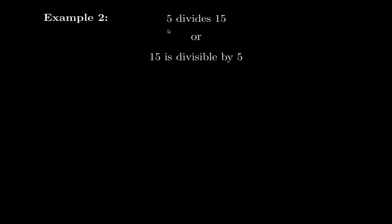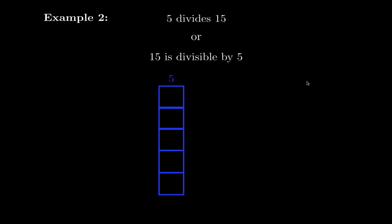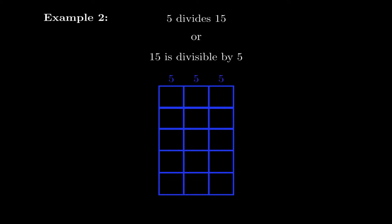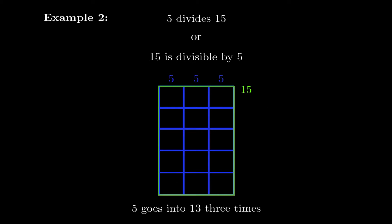We can also say that 5 divides 15 — that's a true statement — or equivalently that 15 is divisible by 5; both mean exactly the same thing. The number 5 is represented by 5 squares, and we make copies of it until we get 15, so we need 3 copies. As you can see, the number 5 divides the number 15 into 3 pieces, so 5 goes into 15 three times. That was the geometric idea — now let's talk about the actual formal definition of divisibility.